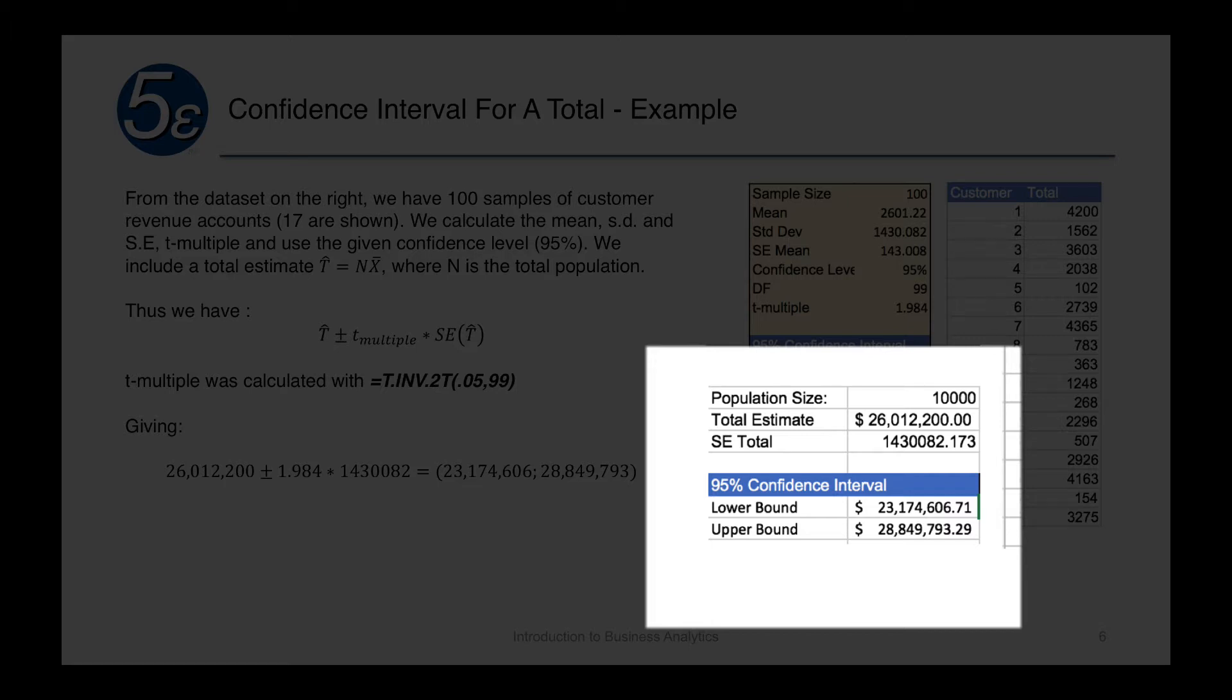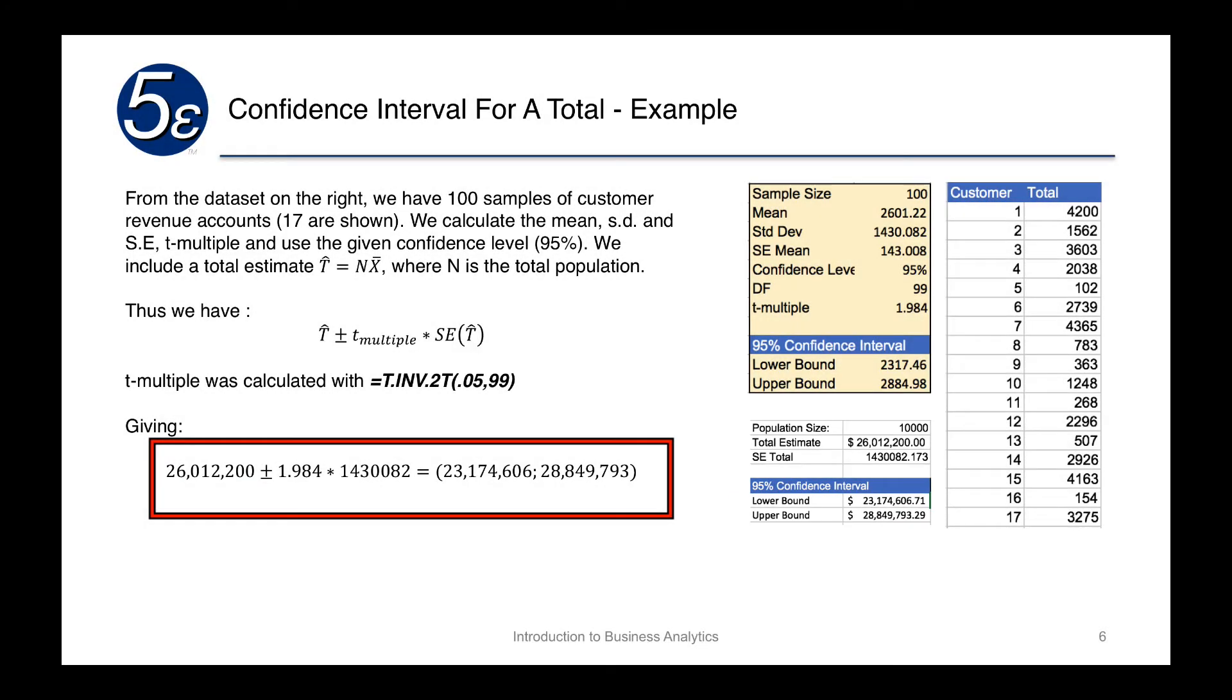So that's what is on the bottom. The 95% confidence interval in the yellow box would be the confidence interval for the mean itself, but we've extended this to include the total. And we end up with 26 million plus or minus 1.984, which is our t-multiple for this, times 1,430,082.